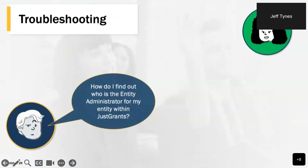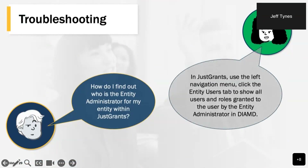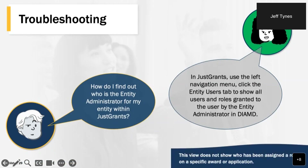Let's troubleshoot some common questions before opening the floor. We are often asked how to know who in an organization is the assigned entity administrator. If you'd like to find your entity administrator, you can log into JustGrants and select the Entity User tab in the left navigation. This will display all users in your JustGrants account, as well as the roles associated with each user, where you can easily find who your entity administrator is.